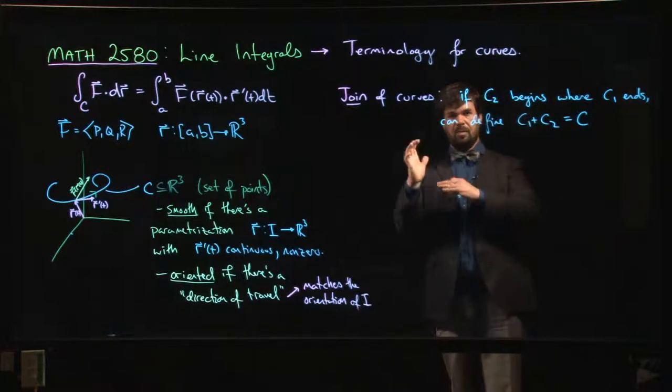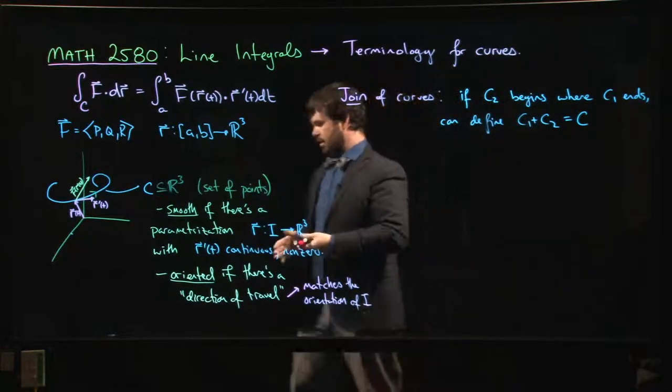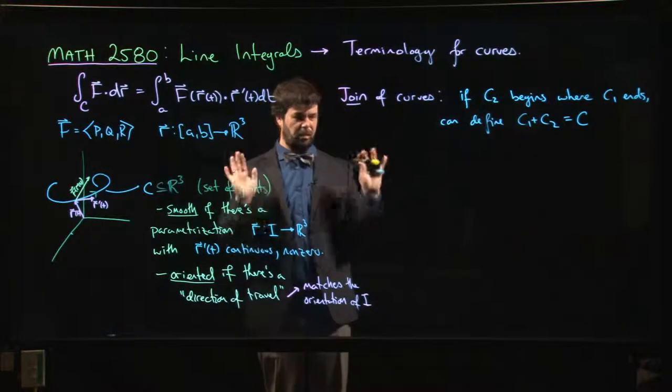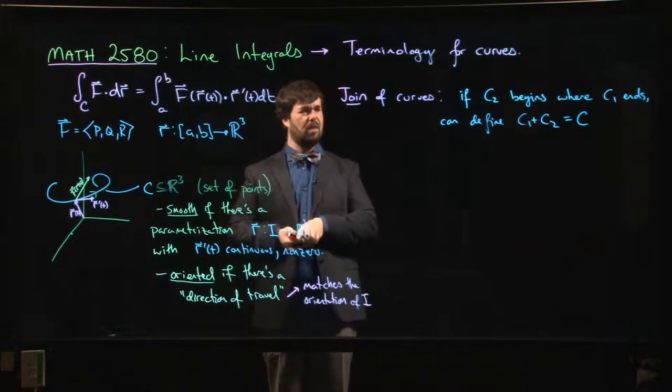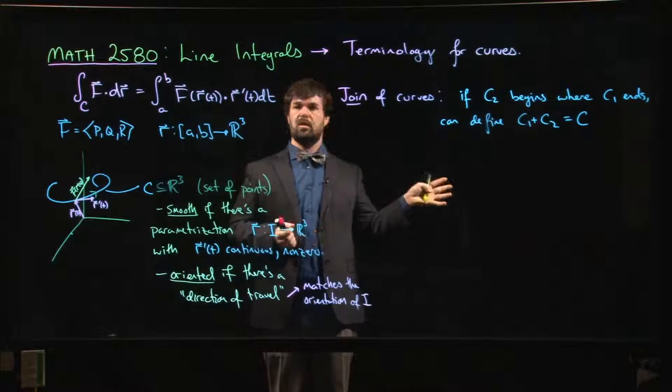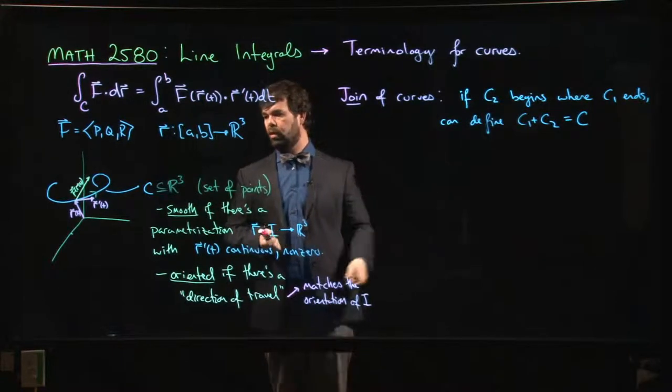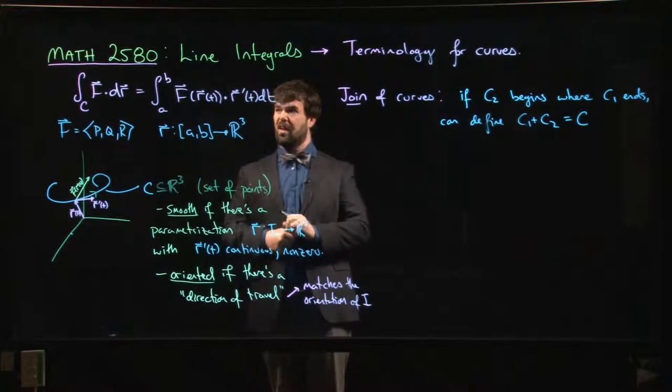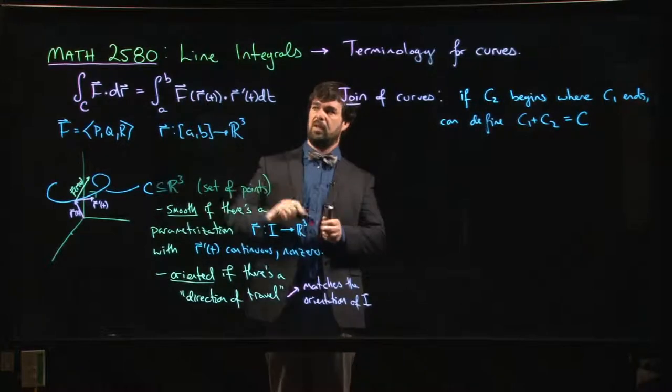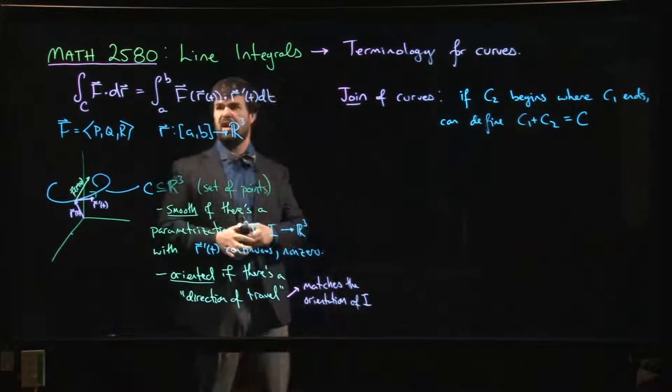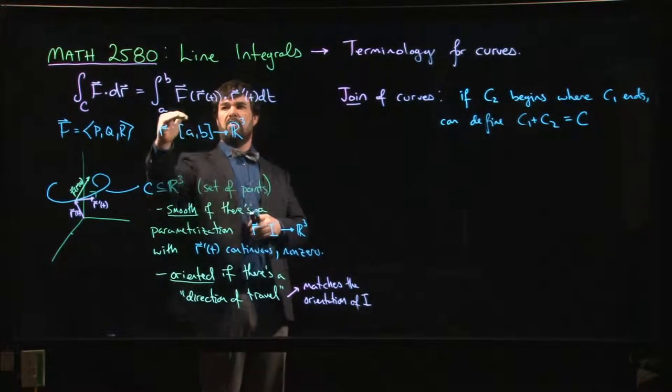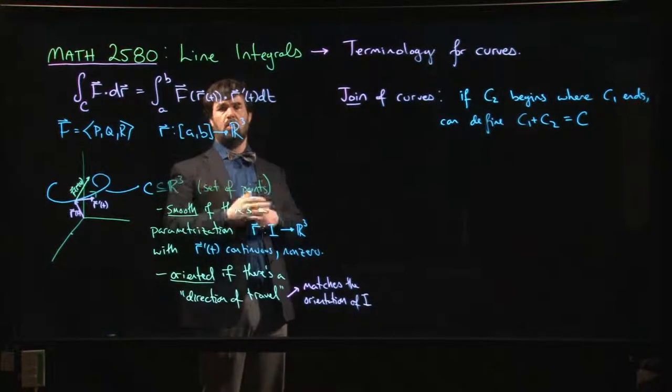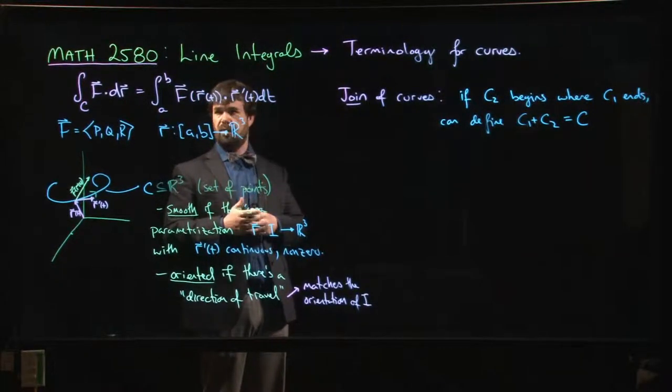So how do you kind of mess around and re-parameterize things so that everything lines up? We don't care, because the only real role that the parametrization is playing for us is in allowing us to set up the integral. And I don't really care if I have to write my integral from 0 to 1 or from 0 to 4 or from 1 to 3. I'm still going to be able to evaluate that integral.